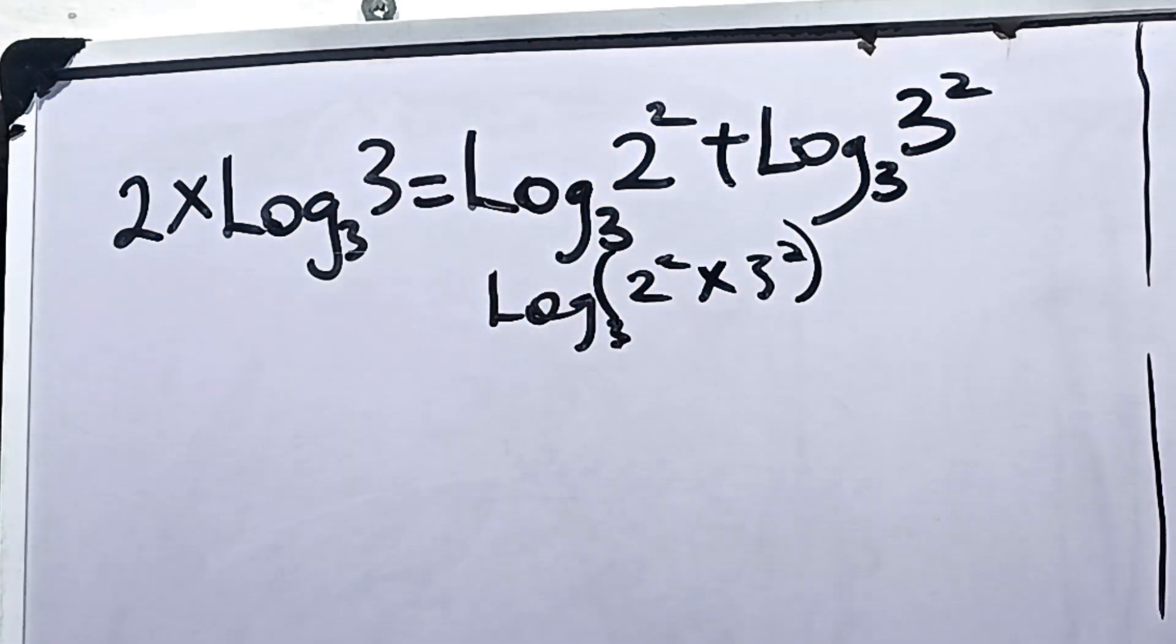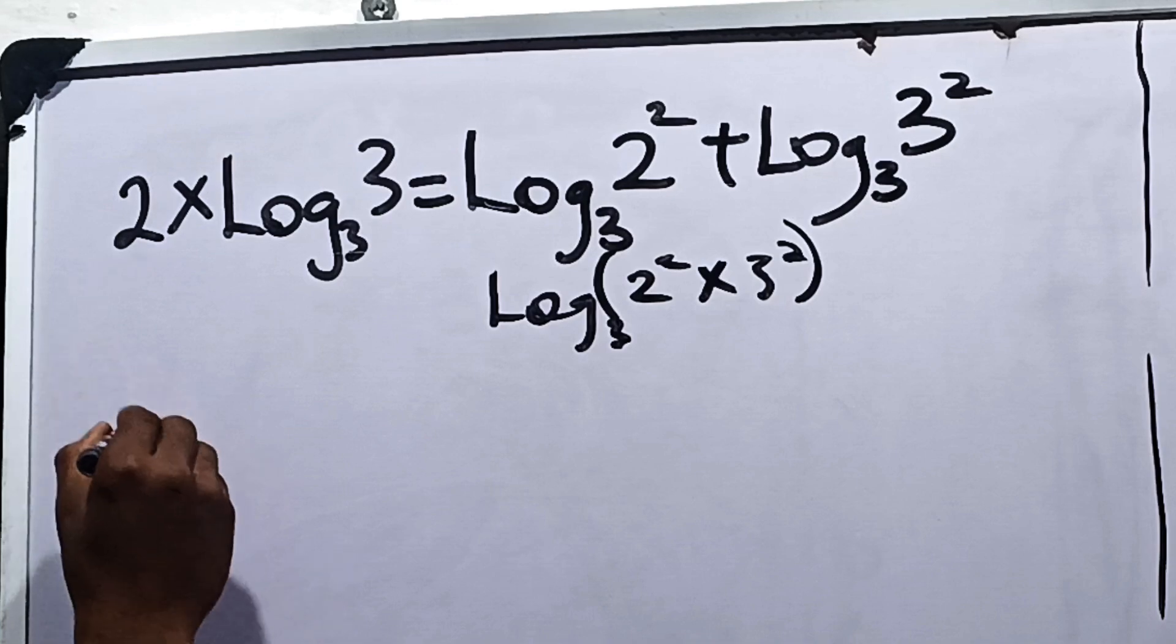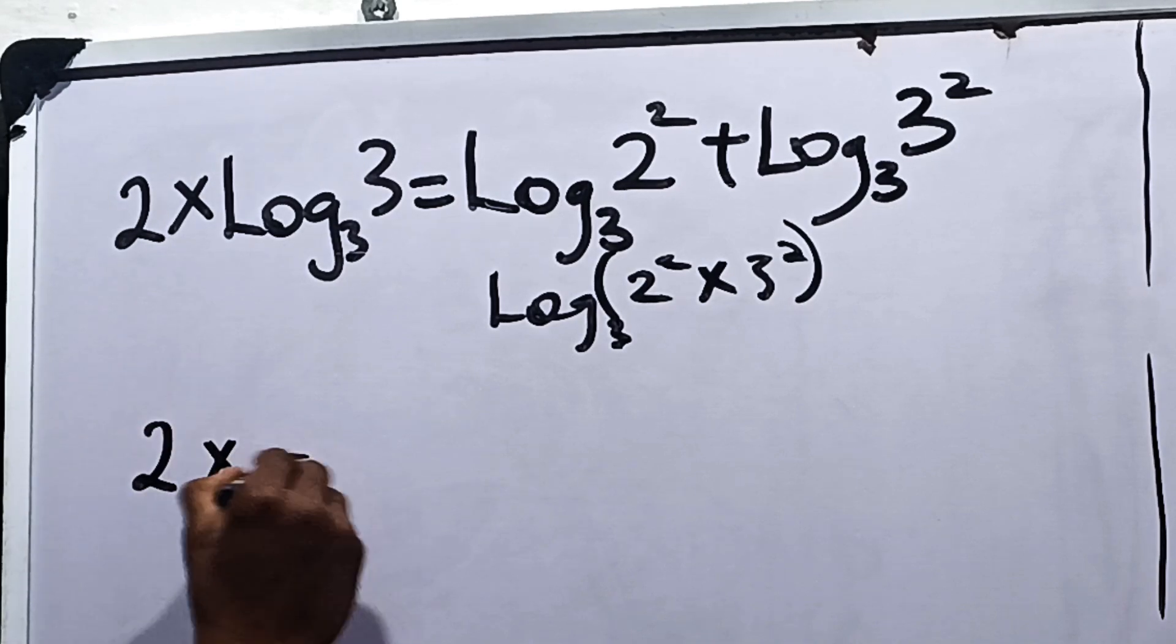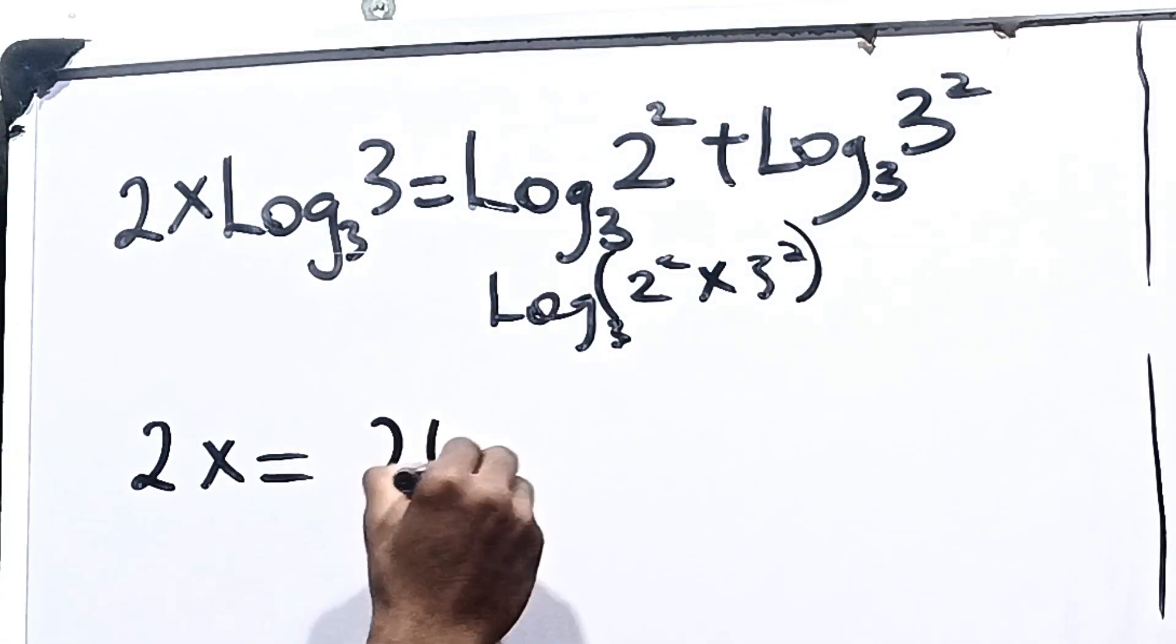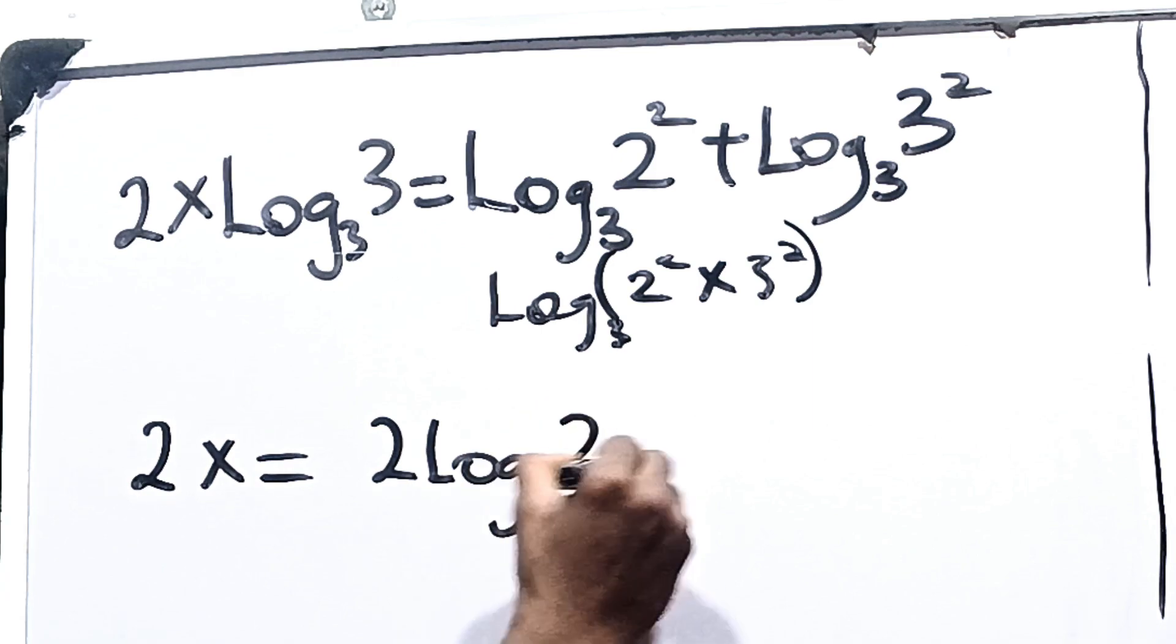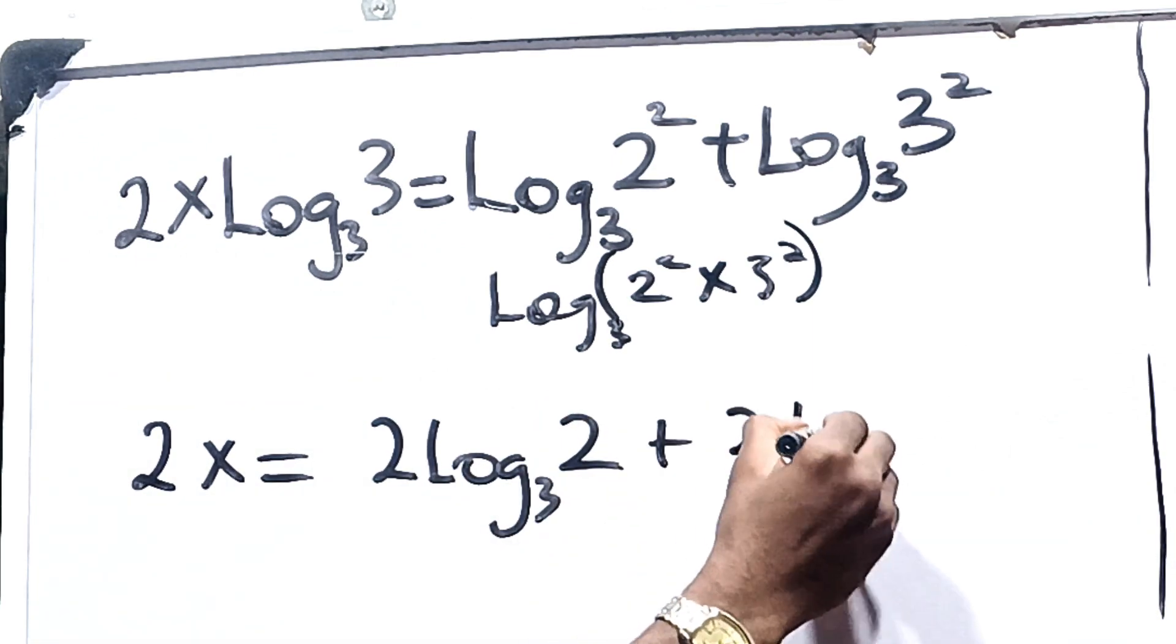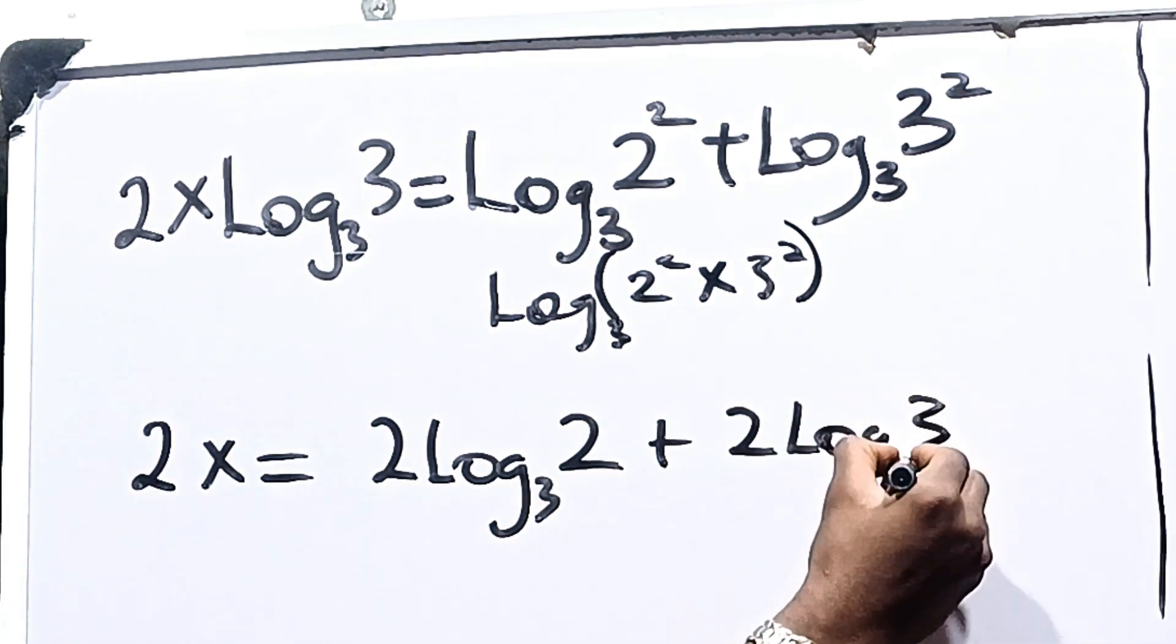Now moving on from here, logarithm of a number to its own base is 1. So 1 times 2x is 2x, and this is equal to 2 times logarithm of 2 to base 3 plus 2 times logarithm of 3 to base 3.